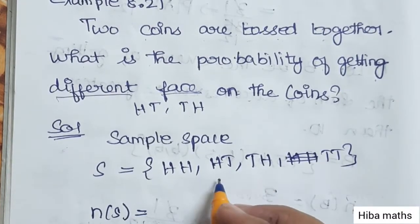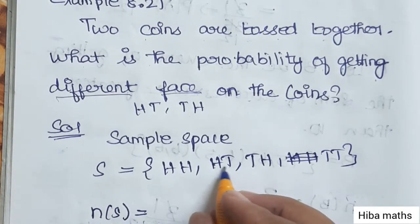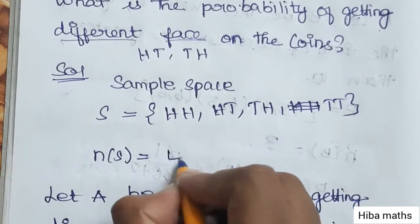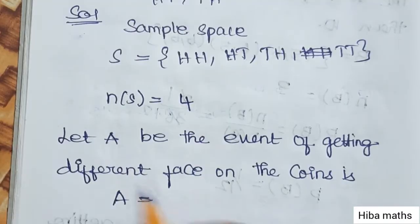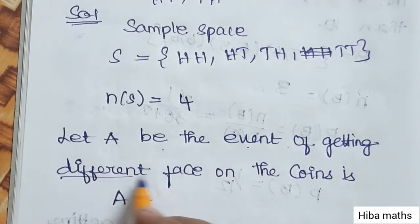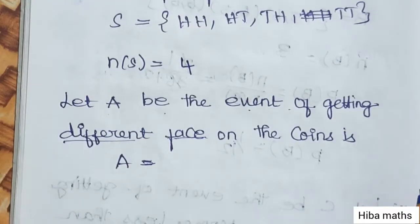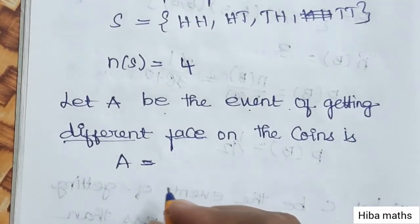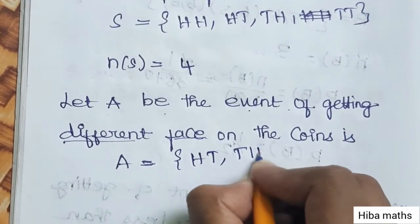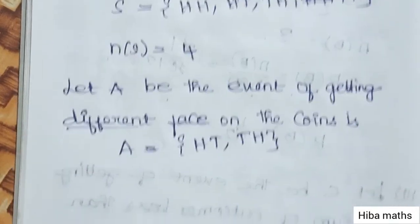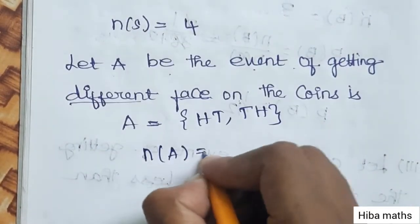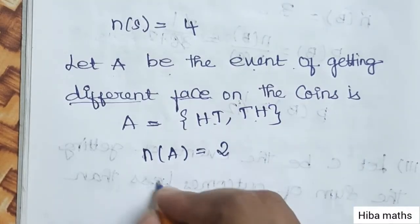The total number of outcomes is 4. Let A be the event of getting different faces on the coins. The favorable outcomes are HT and TH, so n(A) = 2.